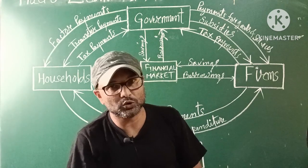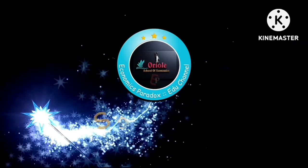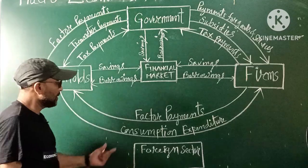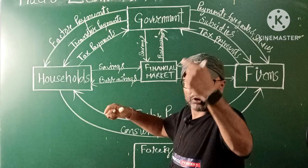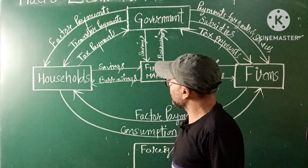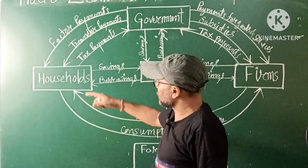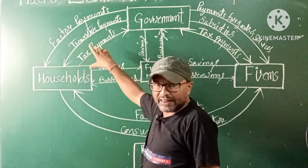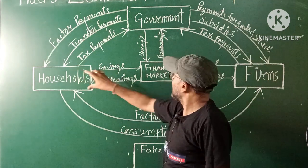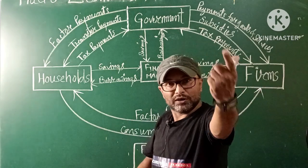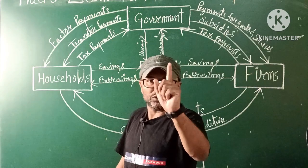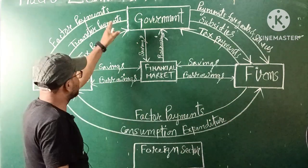In the last class, we already covered the three-sector circular flow. In the two-sector circular flow, we looked at money flow and real flow. The three-sector flow includes household, firms, and government — and we discussed how these three sectors interact with each other.